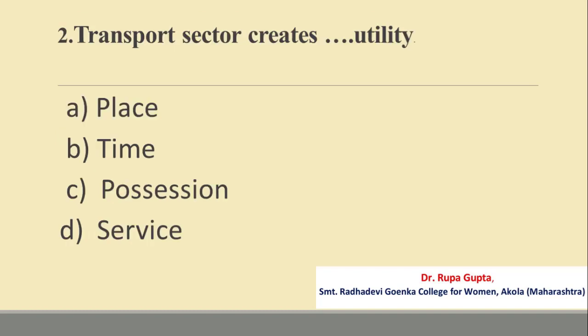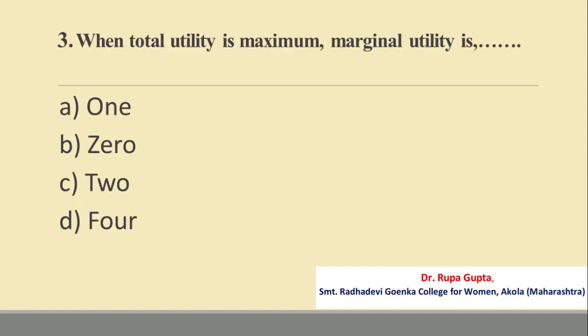Question number 2. The transport sector creates dash utility. Options are: A. Place, B. Time, C. Possession, D. Service. The answer is A, that is Place.